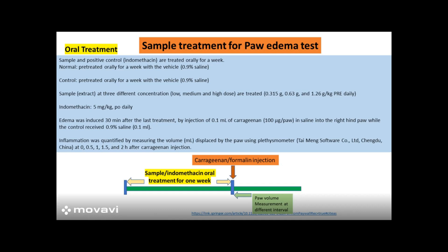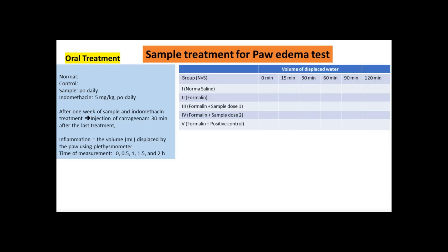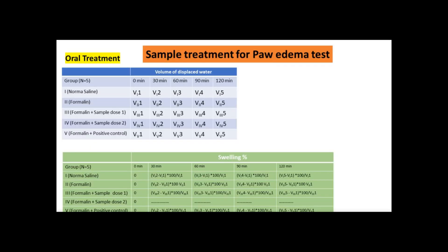The inflammation can be measured at different time points: 0 hours, 0.5 hours, 1 hour, 1.5 hours, and 2 hours. In this way we can measure the volume of inflammation with the help of a plethysmometer. We may have different numbers of mice in each group; in this demonstration, n equals 5 per group. We can take the average volume of displacement at time 0 for each group by measuring the volume using the plethysmometer.